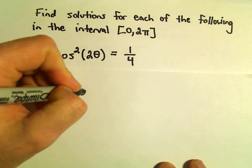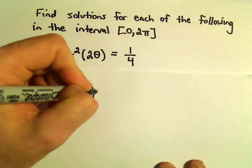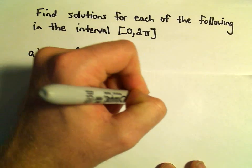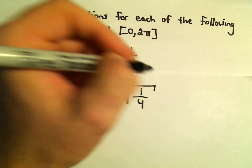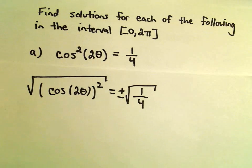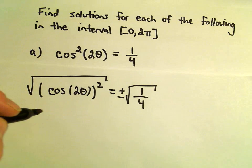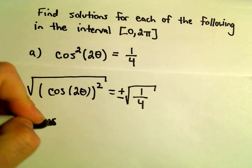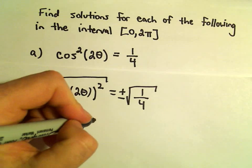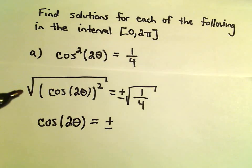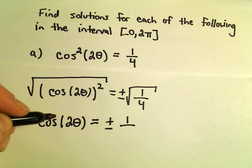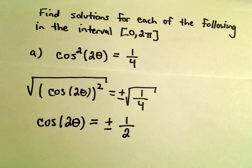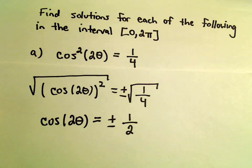I'm going to rewrite that as cosine of 2θ, all being squared, equals 1/4. To get rid of the square, I'm going to square root both sides. Recall when you take a square root, you've got to include both positive and negative. So on the left side we'll be left with cosine of 2θ equals plus or minus — if you take the square root of 1 we get 1, and the square root of 4 we get 2 — so cosine of 2θ equals positive or negative 1/2.